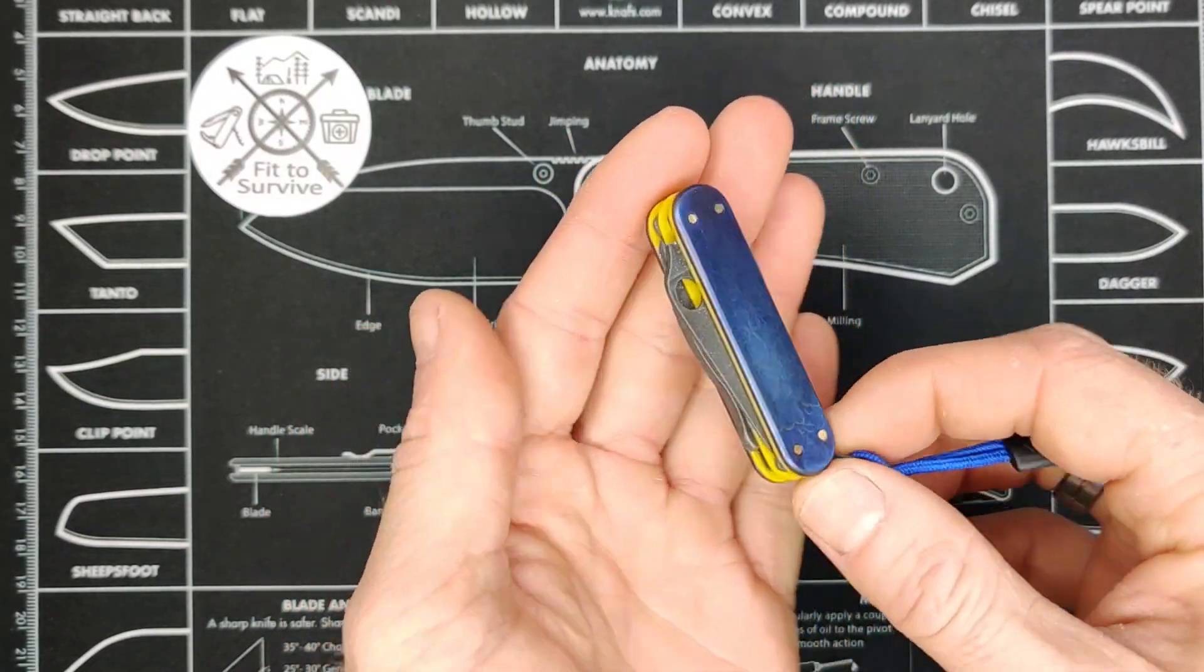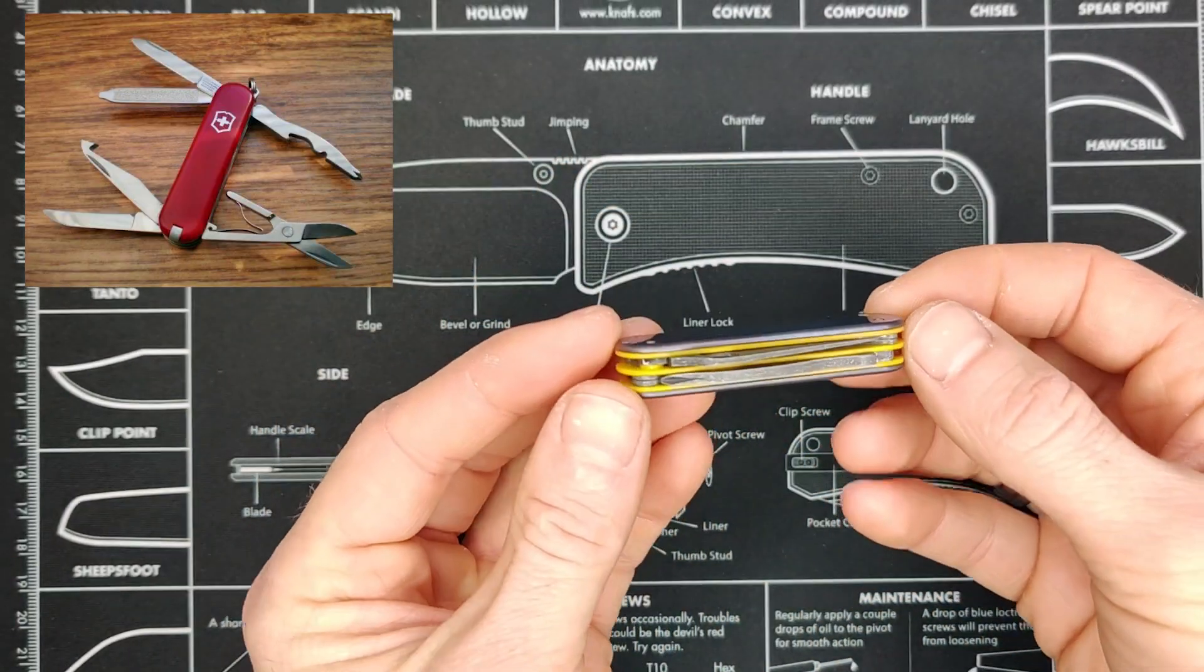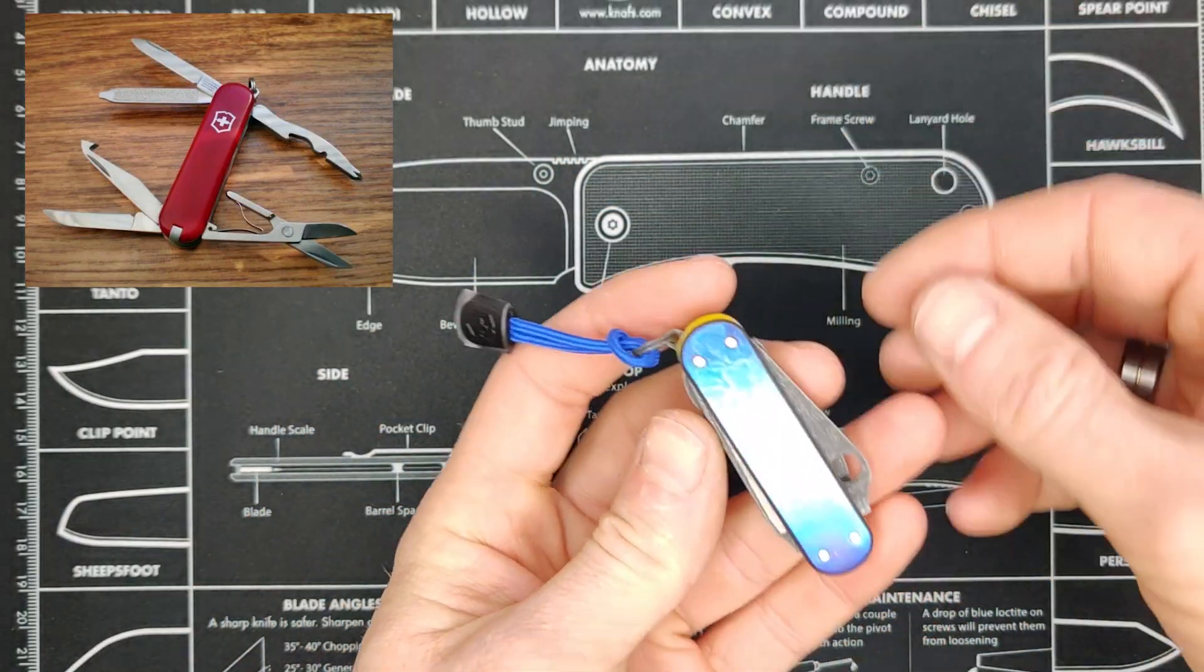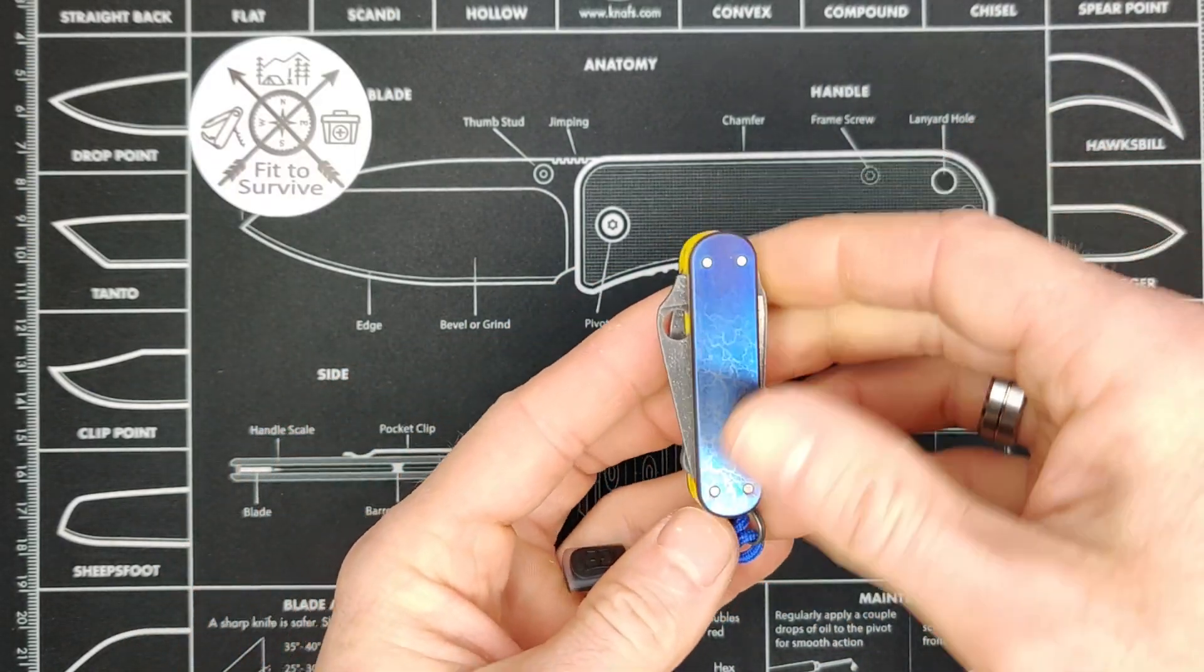I call this a Spidernox Vagabond, because there's actually a Victorinox Vagabond model. It has a similar toolset, only the Spyderco blade has replaced the original blade and emergency blade.